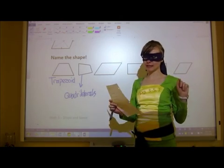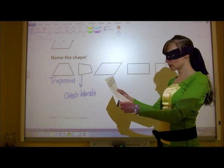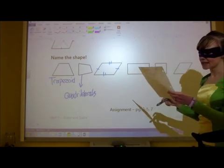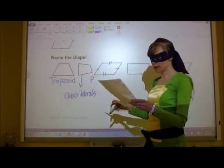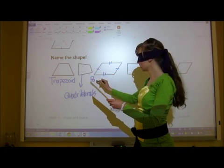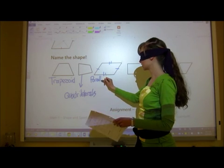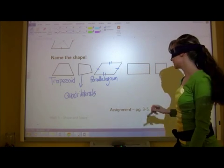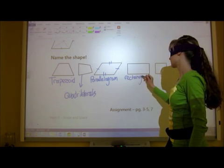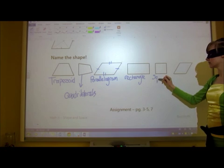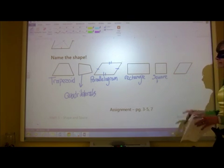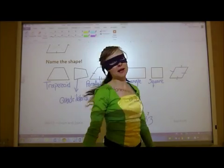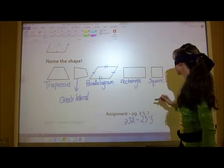This one has no right angles so it can't be a square or rectangle. It looks like these sides are the same length and these sides are the same length, so that makes this a parallelogram — because it has two pairs of equal sides that are opposite each other, not adjacent. This one here is a rectangle, this one is a square, and over here all the sides are equal, so this one is a rhombus.